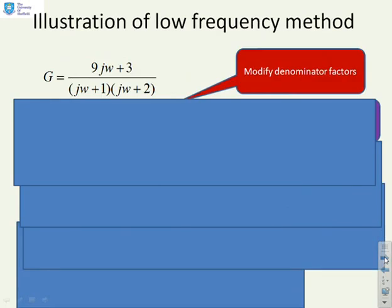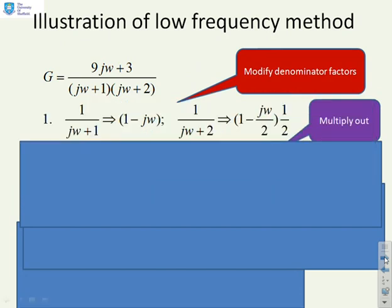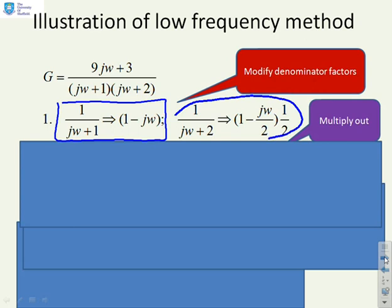So here we go. We've got the example 9jω+3 over (jω+1)(jω+2). So the first thing is to write the Taylor series expansions of these two denominator factors. The Taylor series expansion of 1/(jω+1) is going to be 1-jω, and that's the first-order Taylor series. For 1/(jω+2), you're going to get (1 - jω/2) times a half.